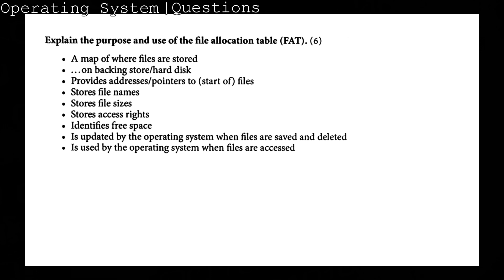The main things I'd try and remember are: a map of where files are stored on the hard drive; provides addresses; stores file names; stores file sizes; stores access rights. That's five points — and I'd also add 'identifies free space'.